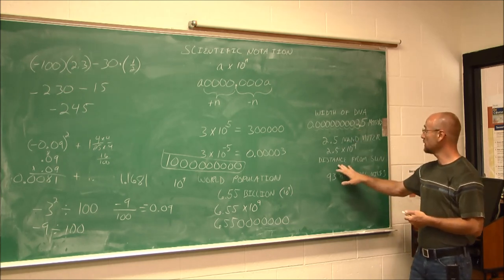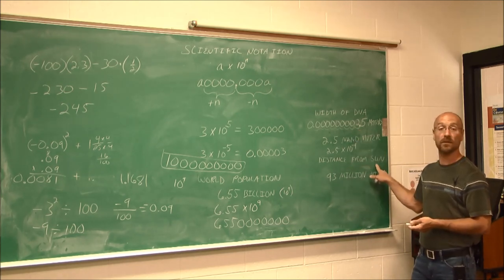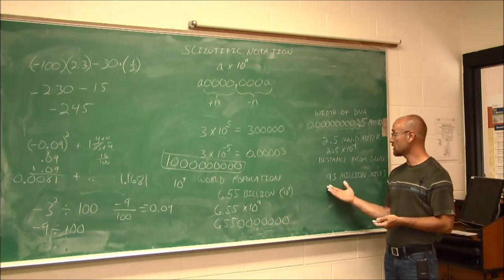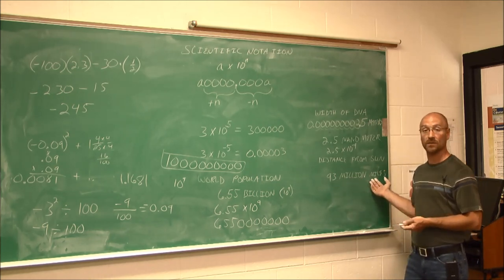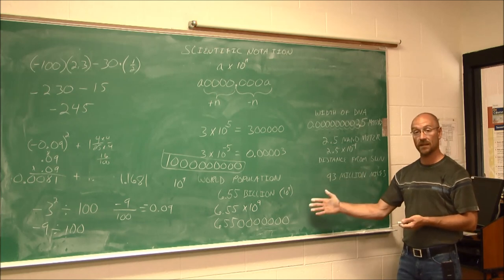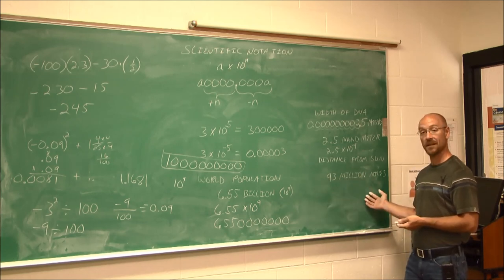This one I'm going to leave for you to do. This is the distance from the sun. Earth is approximately 93 million miles from the sun. I want you to write this out in scientific notation and in standard form.